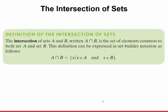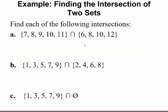Now let's talk about the intersection of two sets. The intersection of sets A and B, written as A intersect B, is the set of elements common to both sets A and B. In set builder notation: A intersection B is the set of all X such that X is an element of A and at the same time an element of B. Think of the intersection as the overlapping region in Venn diagrams. For example, intersecting {7, 8, 9, 10, 11} with {6, 8, 10, 12} — they have 8 and 10 in common, so the intersection is {8, 10}.